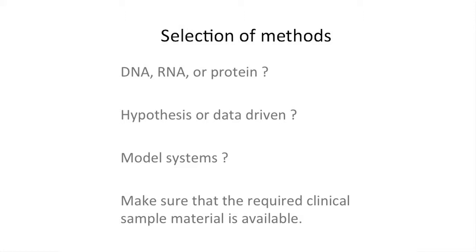Then, selection of methods — DNA, RNA, protein — hypothesis or data driven, model systems. This is very important. When we do cancer research, we know that for any cancer patient, at least in Scandinavia but most places in the world, there's a paraffin block. So if we develop something that requires frozen tissue, we start with a failure, because we will not be able to implement it in the clinic. So we always know that it should either be used on paraffin sections or blood — that's what you can get, or urine, or whatever. Don't try to develop something you will never be able to implement.